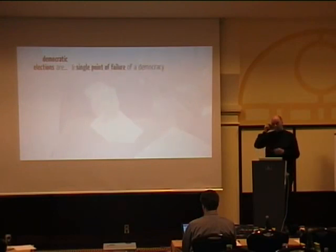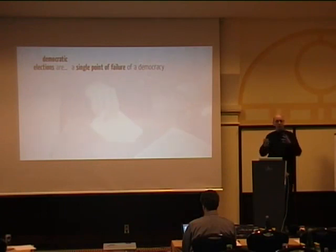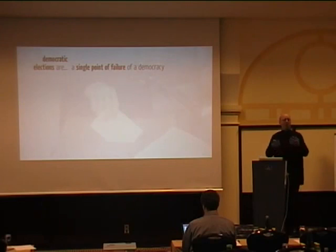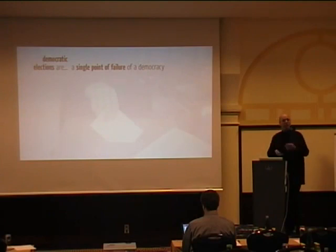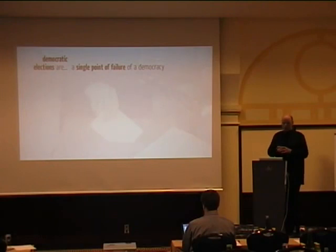It's interesting to see democratic elections as a single point of failure in a democracy — it's the subsystem of democracy. If this subsystem fails, the whole of democracy fails. You can make a democracy fail by forging elections, by making election fraud happen. So I'm going to talk about e-voting.